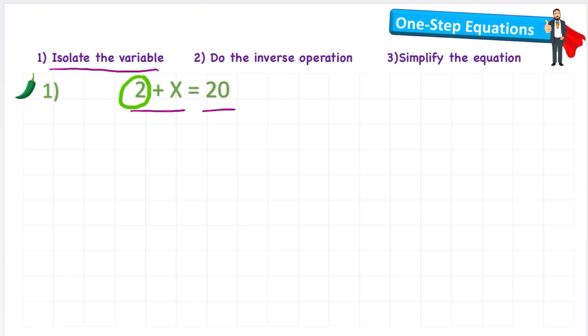So in order to get the x on its own I need to get rid of this 2 and the only way to get rid of a positive 2 is to add a negative 2. So I'm going to rewrite my question like this. Negative 2 or minus 2 plus 2 plus x equals 20. But remember what we just said, whatever we do to one side we must do to the other. So we added a negative 2 to this side. I now must add a negative 2 to this side. So I'll put it here. There we go.